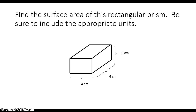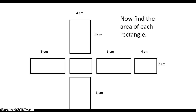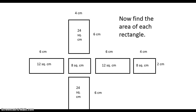Let's find the surface area of this rectangular prism. This time we have units — centimeters — so we need to make sure that we include the appropriate units at the end. I'd start off by taking this apart and labeling each face. Now I find the area of each of the rectangles, and remember my units — it's square centimeters, or centimeters squared. I got my areas by multiplying the length and width of each of these rectangles.